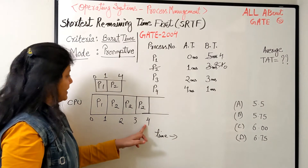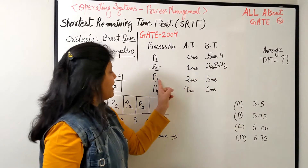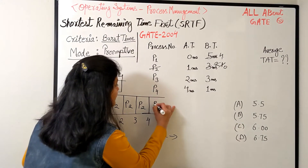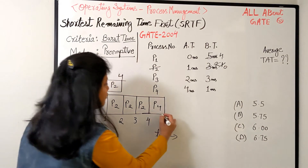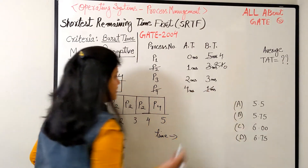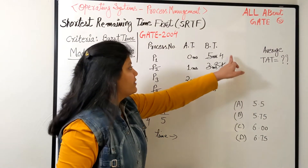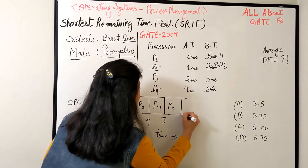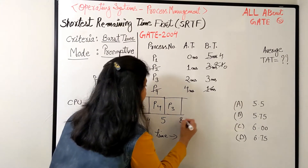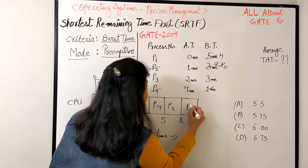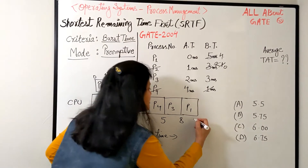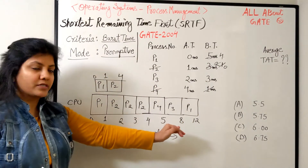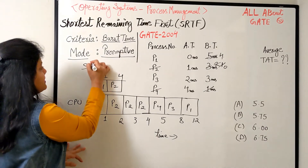By the time 4, we have P1 which needs 4, P3 which needs 3, and P4 which needs 1. So who is going to get scheduled? Definitely P4, because it is the smallest among all. So from 4 to 5, P4 finishes. Next we have P1 needing 4 and P3 needing 3 — P3 is smaller. So P3 runs from 5 to 8, finishing at 8. Finally, P1 is scheduled. It needs 4 bursts, so 8 plus 4 equals 12. This is exactly how you schedule your processes on the CPU with SRTF.